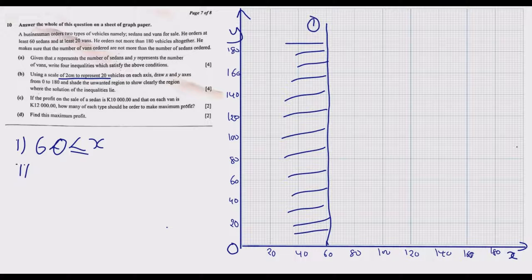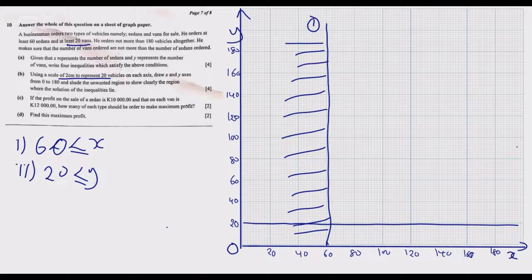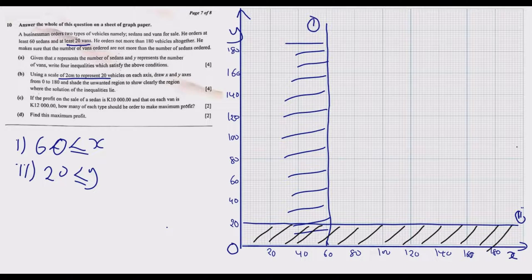Inequality two: y ≥ 20, because the businessman orders at least 20 vans. On the y-axis, find 20 and draw a horizontal line there. That is equation two. The unwanted region is below this line.